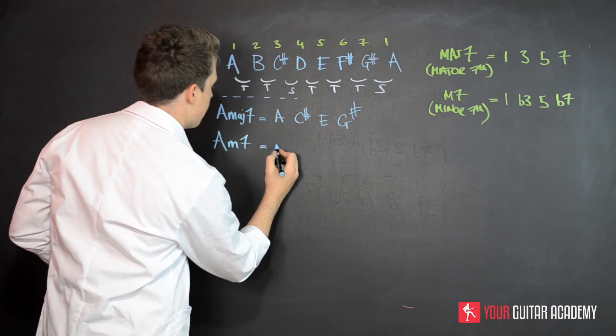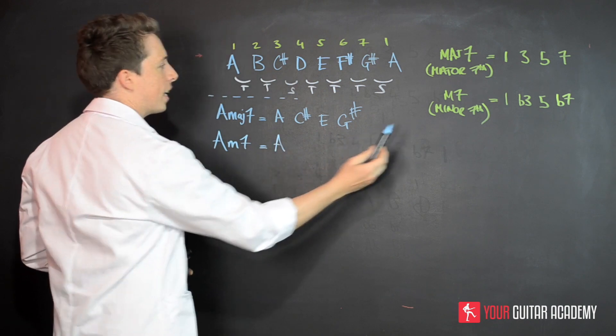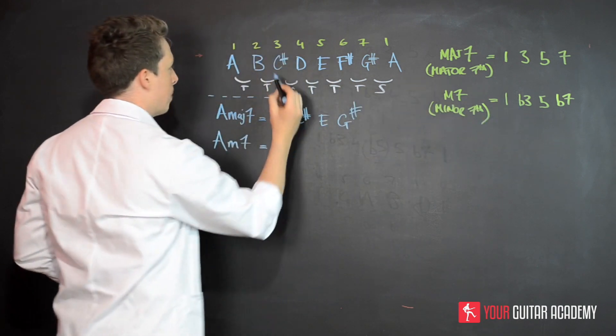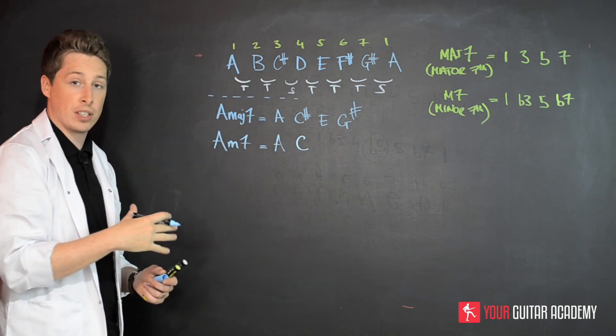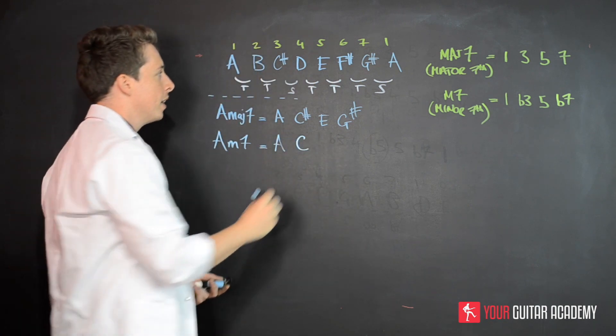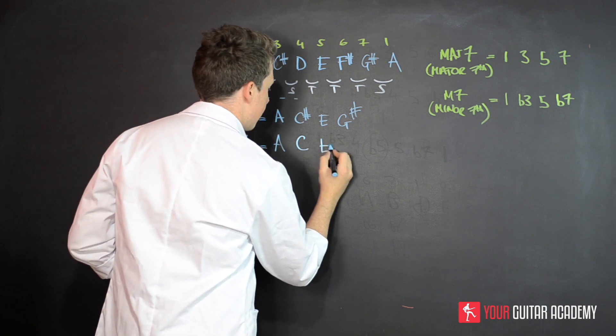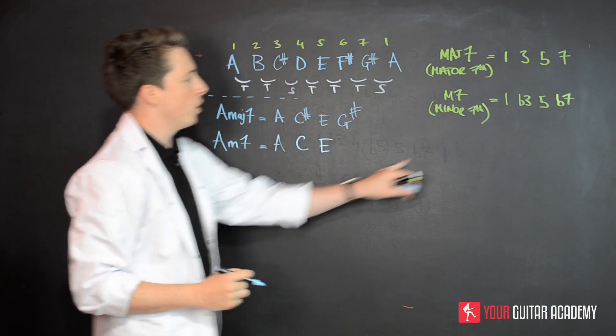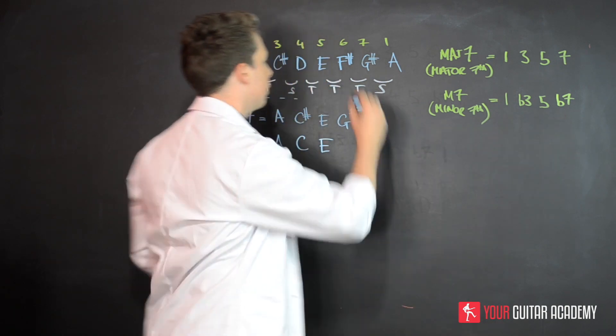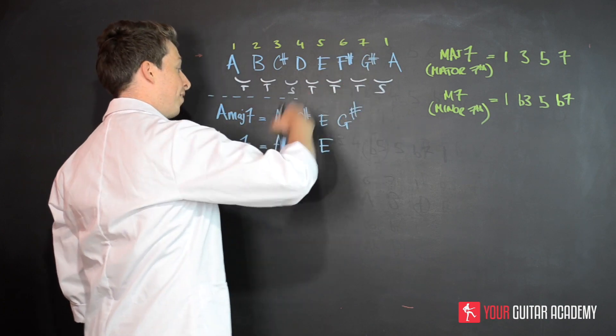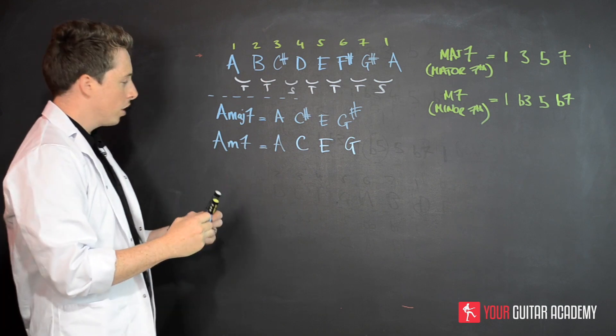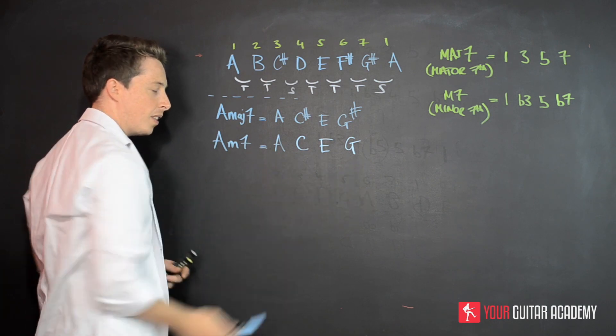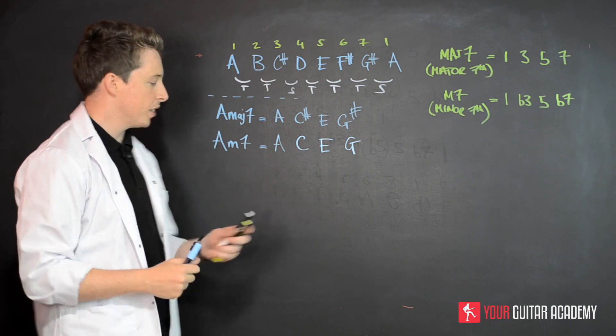So we're going to take the root note of A. We're then going to take a flattened third, remember, so C instead of C-sharp. So that's C-sharp flattened, so coming down one fret. Then we're going to take the five, which is E. And now at this point, we need to take a flattened seventh. So G-sharp gets flattened to become a G. And there we have it. Those four notes are minor seventh, A minor seventh.